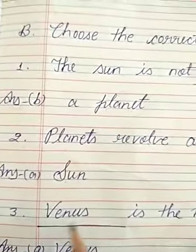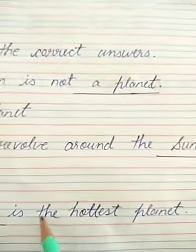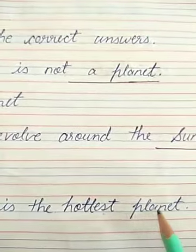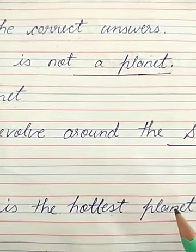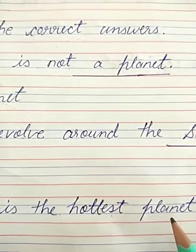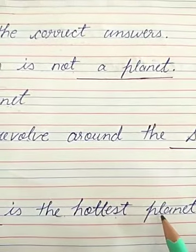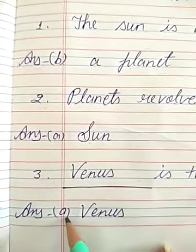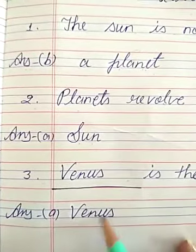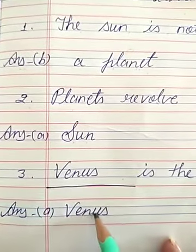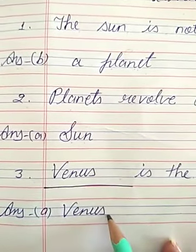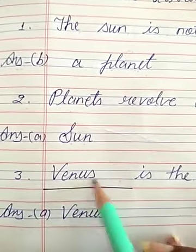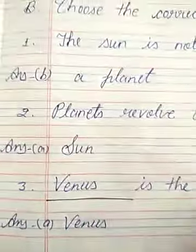Number 3. Dash is the hottest planet. Which planet is the hottest in the solar system? The answer is Venus. So, write answer Option A — Venus. V-E-N-U-S, Venus. Write Venus here also.